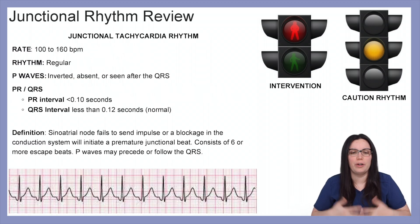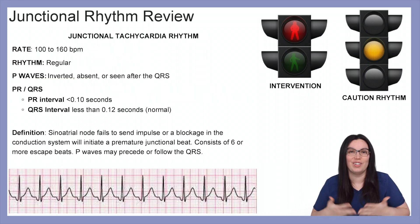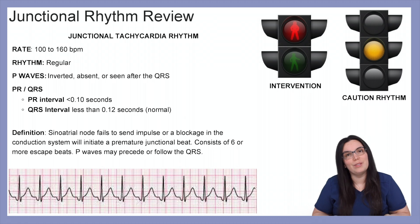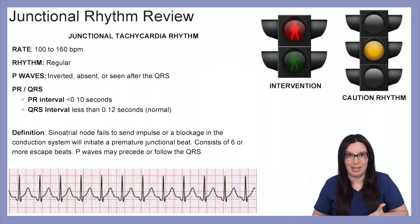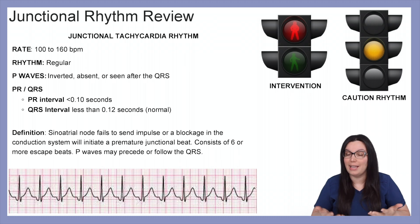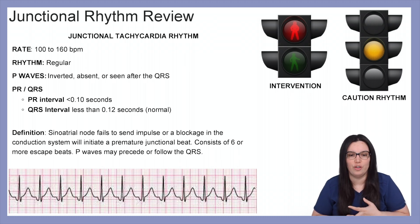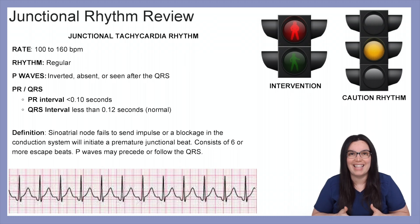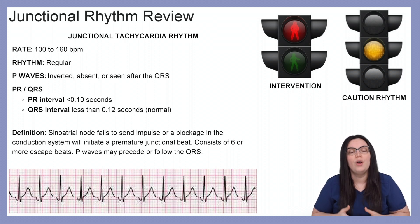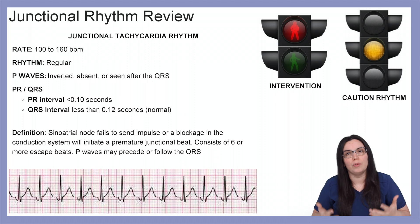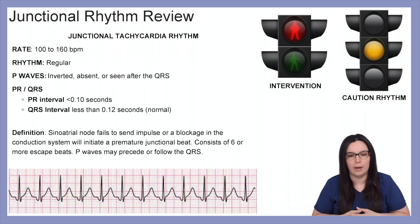Next, we're moving on to our junctional tachycardia rhythm. The rate of this rhythm will be between 100 to 160 beats per minute. The rhythm will be regular, and P waves will again be either inverted, absent, or seen after the QRS. PR intervals will be less than 0.12 seconds, and the QRS interval will also remain normal.